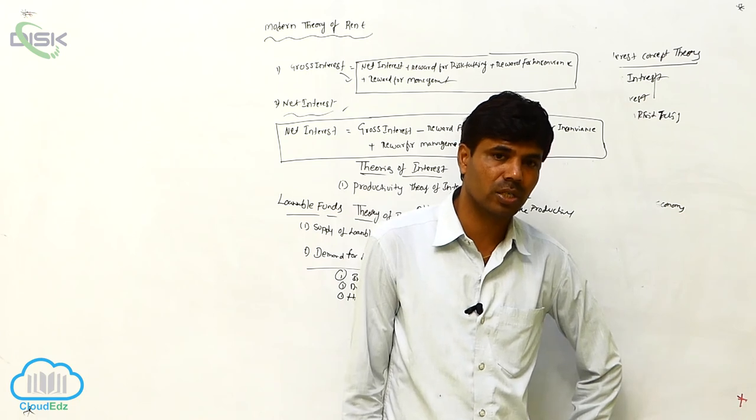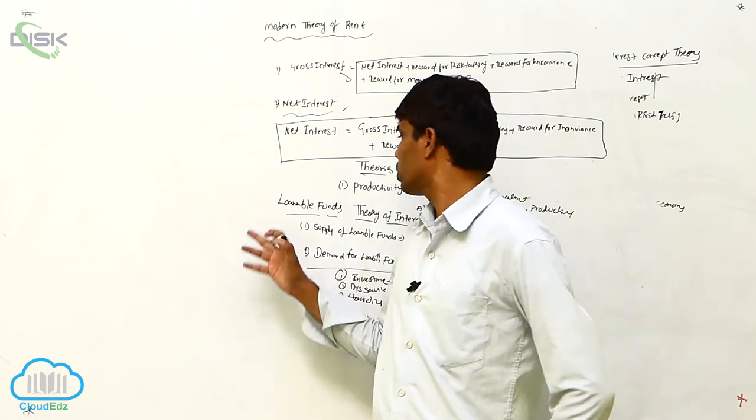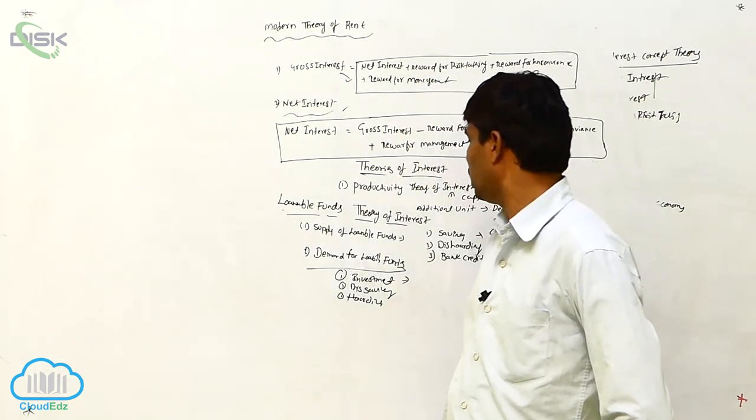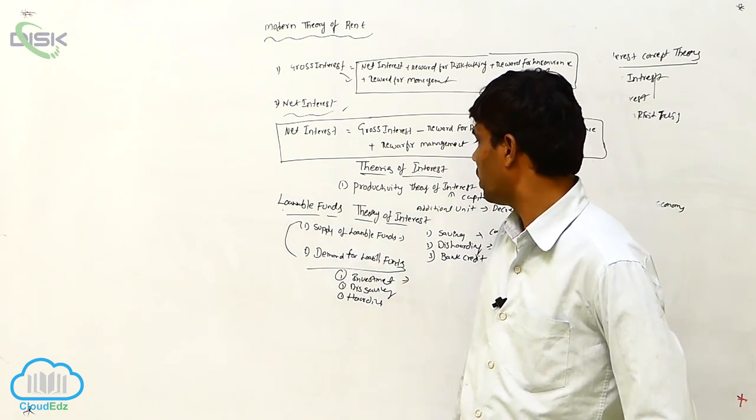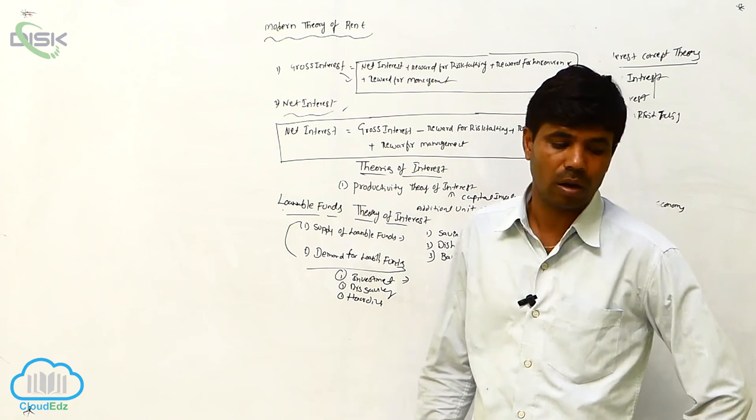These are the things we are considering. These belong to loanable funds theory of interest. Two things are main playing the role: the supply of loan funds and demand for the loan funds.